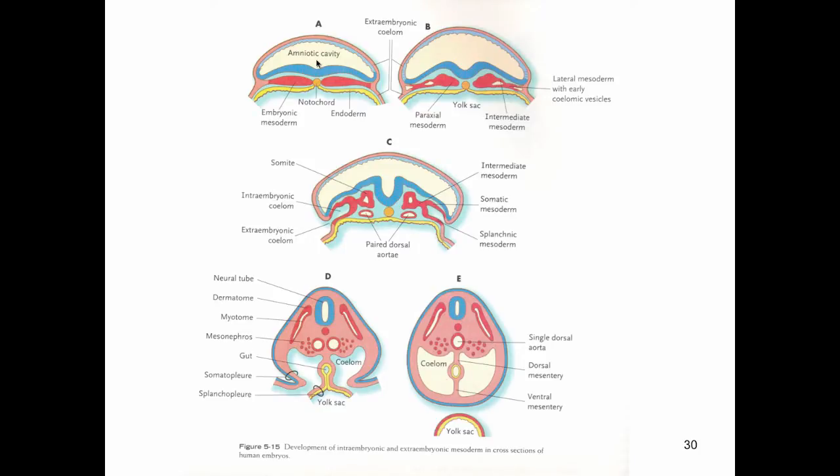This lateral folding forms the body cavities. That type of folding is sometimes referred to as transverse folding or lateral folding. What that looks like, so up here in A we have our trilaminar embryo.